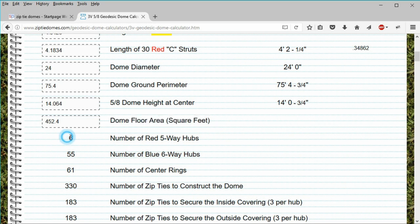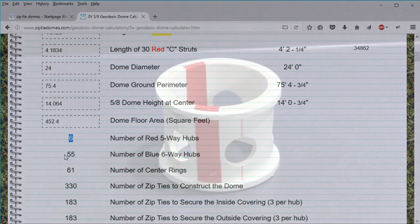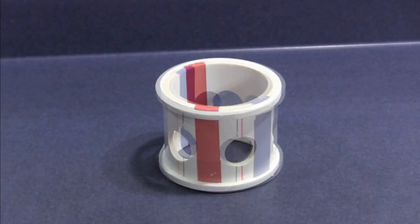This dome requires 6 red 5-way hubs and 55 blue 6-way hubs, giving a total of 61 hubs and center rings required.